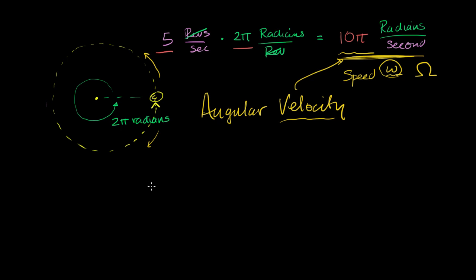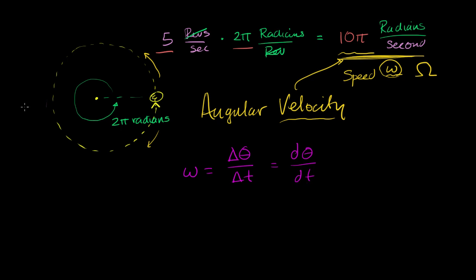There are a couple of ways to think about angular velocity. You could say angular velocity equals change in angle over change in time — for example, 10 pi radians per second. Or, in the calculus sense, instantaneous angular velocity is the derivative of your angle with respect to time: how the angle is changing with respect to time. With that out of the way, I want to see how this relates to the actual speed of the object.